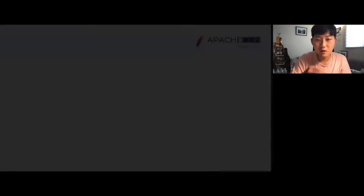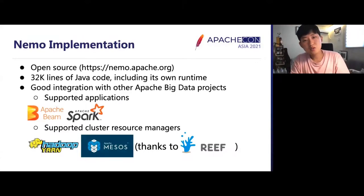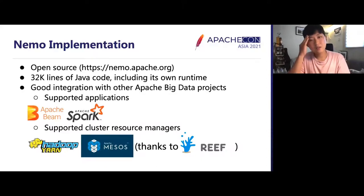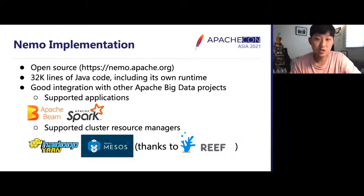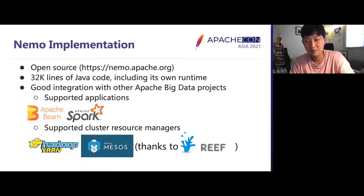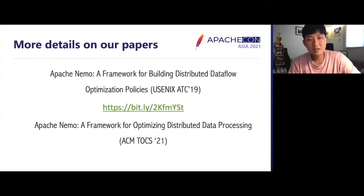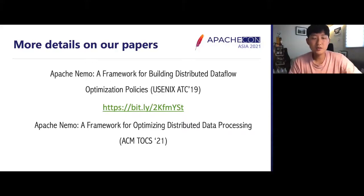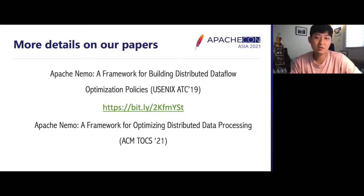Nemo is open source and you can find more information on our website and GitHub. We have good integration with other Apache projects including Apache Beam — which has Apache Nemo as one of its official runners — as well as Apache Spark and resource managers like Hadoop YARN and Hadoop Mesos, thanks to Apache REEF. Further details can be found in our conference paper presented at ATC 2019, as well as a journal paper shortly available in ACM Transactions on Computer Systems.